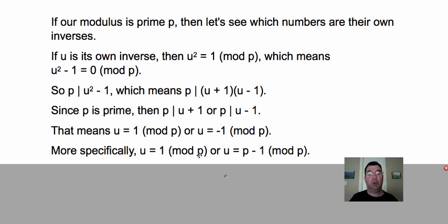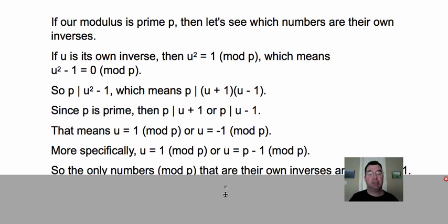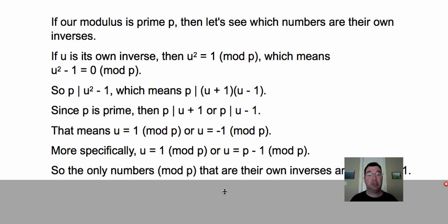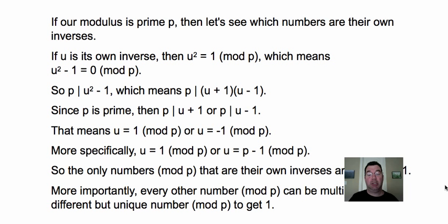So those are the only two numbers modulo p that are their own inverses. One and p - 1 are their own inverses. And no other number has that property modulo p. So what that means is every other number that's not one and is not p - 1 has some other multiplicative inverse. So there's some other number that you would have to multiply by that number to get one. That becomes very important in Wilson's theorem.